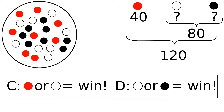The second chance is a choice between these two options. C, win if either a red ball or a white ball is drawn. And D, win if either a black ball or a white ball is drawn. Which would you prefer here?